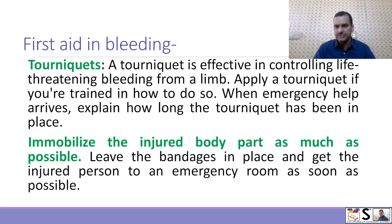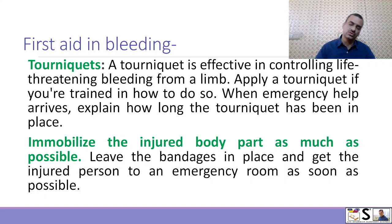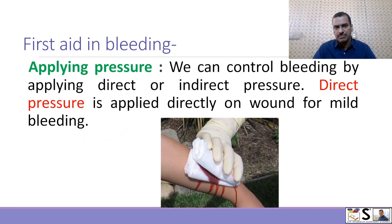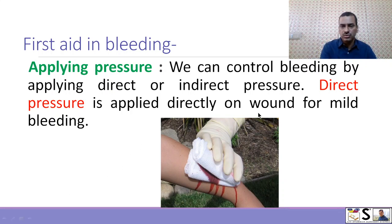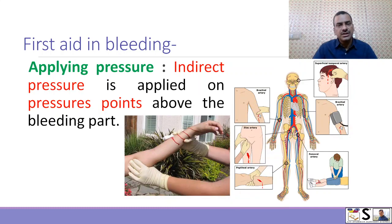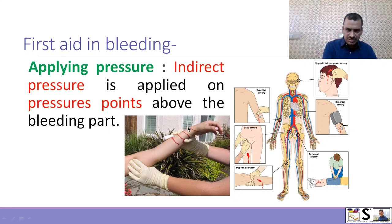Immobilize the injured body part as much as possible. Leave the bandage in place and get the injured person to an emergency room as soon as possible. We can control bleeding by applying direct or indirect pressure. Direct pressure is applied directly on the wound for mild bleeding — you can see here, we apply pressure directly on the wound. Indirect pressure is when we apply pressure above the bleeding part on pressure points.